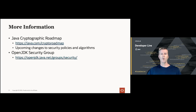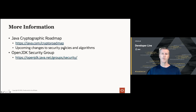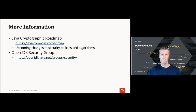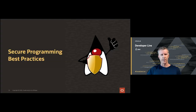Many of the restrictions and algorithms I talked about today are published on the Java crypto roadmap, which provides information about upcoming changes to security policies and algorithms. I highly recommend checking it out periodically. It also provides instructions for testing whether changes might affect your applications before they take effect. Most of the work we do is in the open in OpenJDK—you can go to the security group to find out more and get involved. Now I'll hand it over to Chris to talk about secure programming best practices in Java.